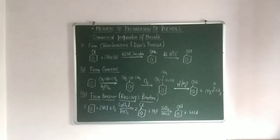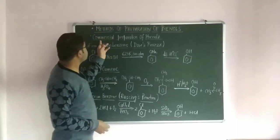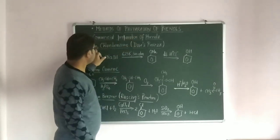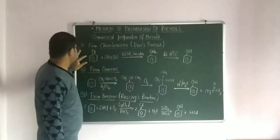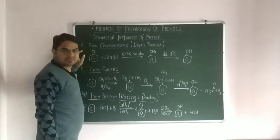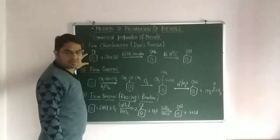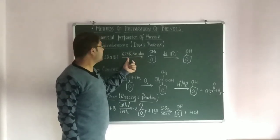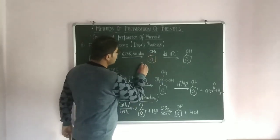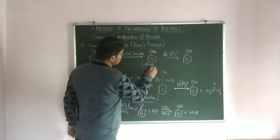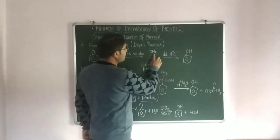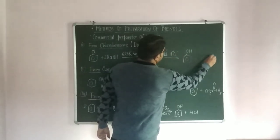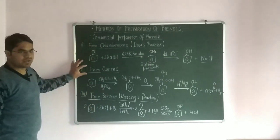Now the next method is the commercial preparation of phenol from chlorobenzene — that is Dow's process. In this process, chlorobenzene is treated with sodium hydroxide at 623 Kelvin and 300 atmospheric pressure. First it forms ONa, that is sodium phenoxide — a stable ion. Sodium phenoxide is then treated with dilute acid HCl, forming O-H on the ring — phenol — with elimination of salt.